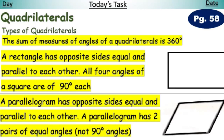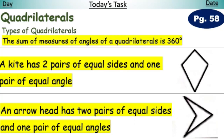A parallelogram has two pairs of equal sides and two pairs of equal angles, not 90-degree angles. An arrowhead has two pairs of equal sides and one pair of equal angles.